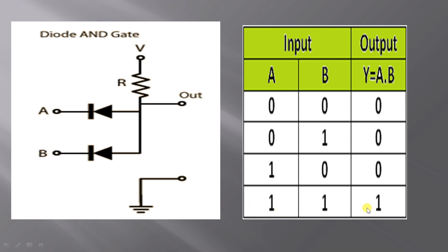Now I shall explain the case where A is equal to 1 and B is equal to 1, so output Y is also 1. Give 5V to A and give 5V to B. These two are high voltages, so A is equal to 1 and B is equal to 1. High voltage is given to the negative terminal of both diodes, so these two diodes are in reverse bias.